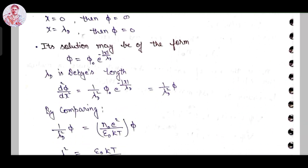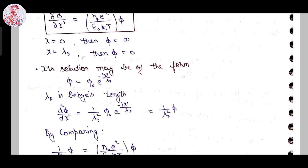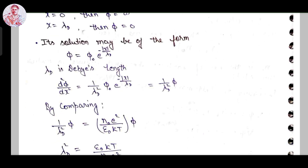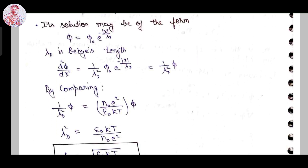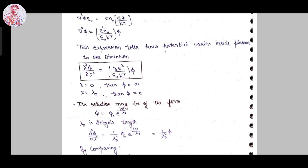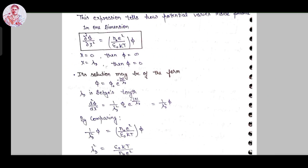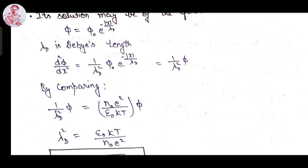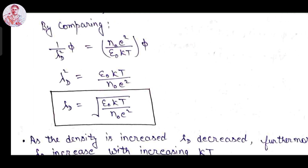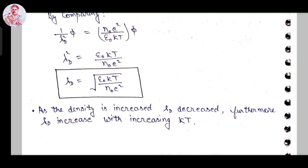The solution of this equation can be written as φ = φ₀ · exp(−|x|/λ_D), where λ_D is the Debye length. Then d²φ/dx² = (1/λ_D²)φ₀ · exp(−|x|/λ_D) = (1/λ_D²)φ. Comparing both equations, we get 1/λ_D² = n₀e²/(ε₀kT), and therefore the Debye length is: λ_D = √(ε₀kT / n₀e²). As density increases, λ_D decreases; and λ_D increases with increasing kT (temperature).